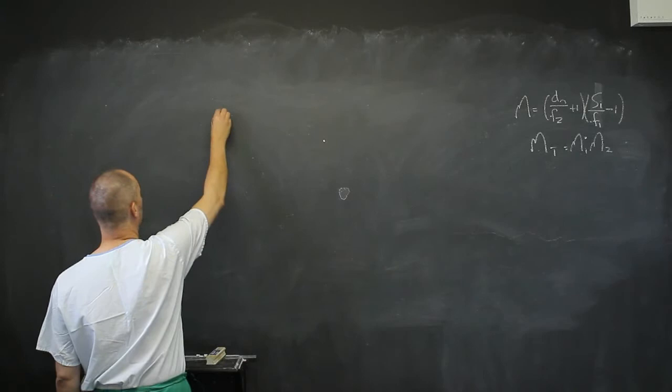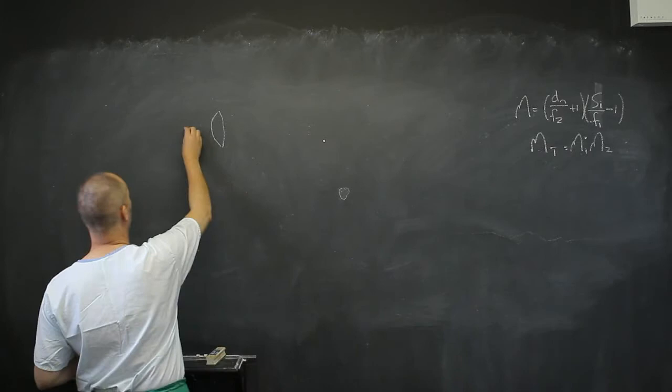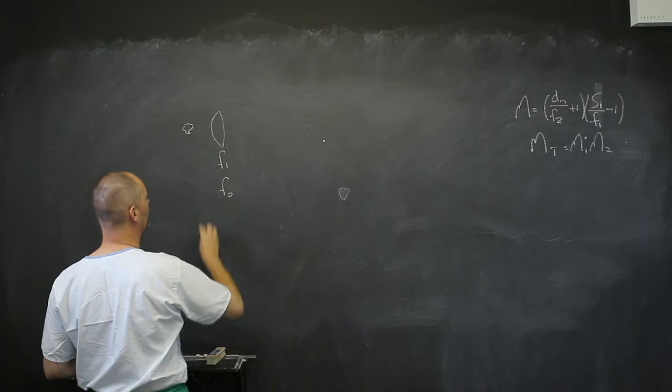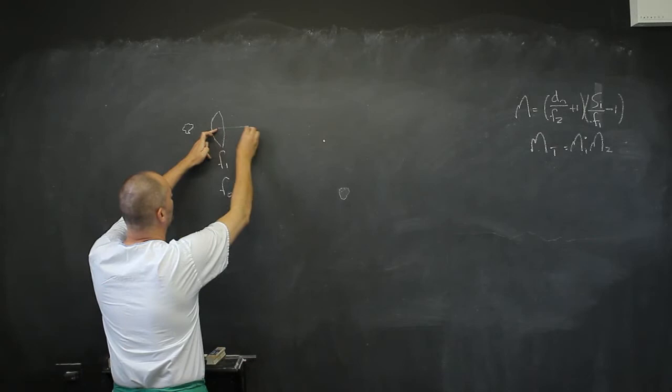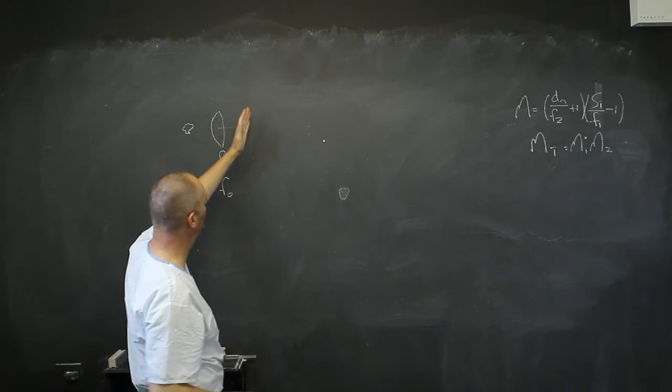And this is called, if you have your little amoeba that you're looking at there, this is called F1 or the object lens. And usually you're going to place it, it will have a focal point, a focal distance.